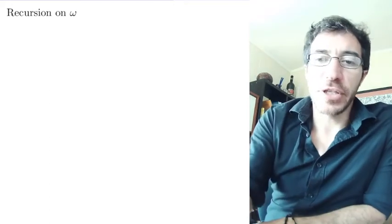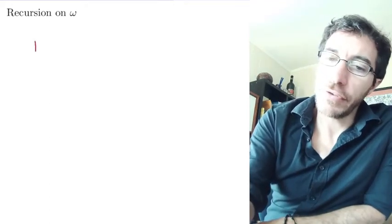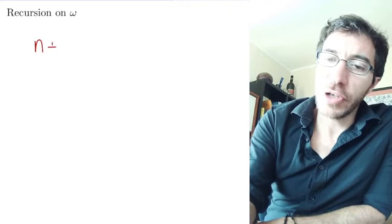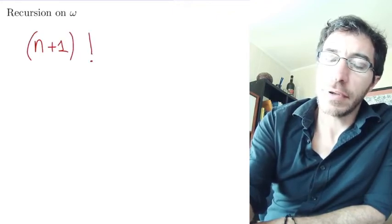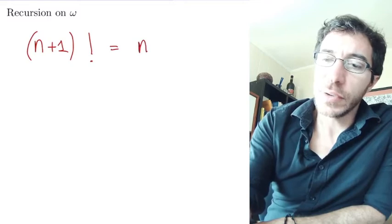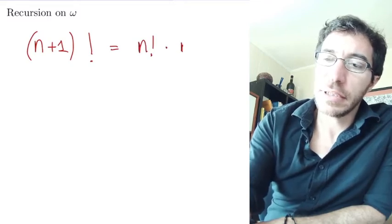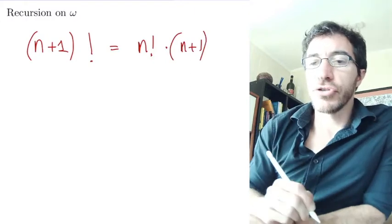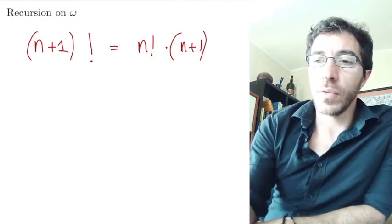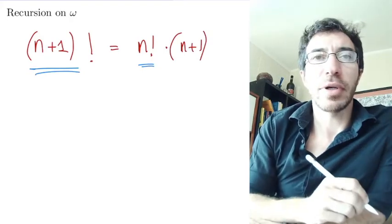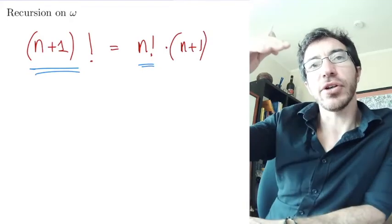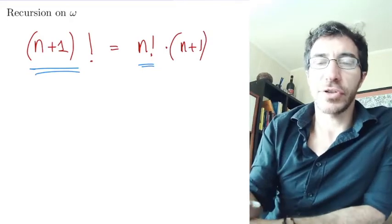For instance you can define the factorial function by the property that n plus 1 factorial is equal to n factorial times n plus 1. So if you already know what n factorial is then you can figure out what n plus 1 factorial is, and like that you can go through all the numbers and get all the factorials.